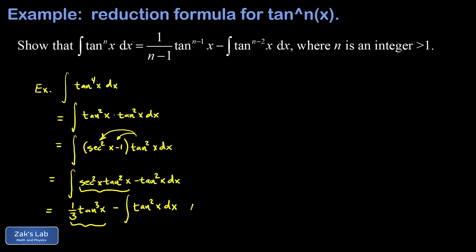The point here is to illustrate by example that this power reduction formula works. I started with an n of four. I ended up with one over four minus one times tangent to the four minus one, right? Tangent cubed minus the integral of a power of the tangent function. That is two less than what we started with.